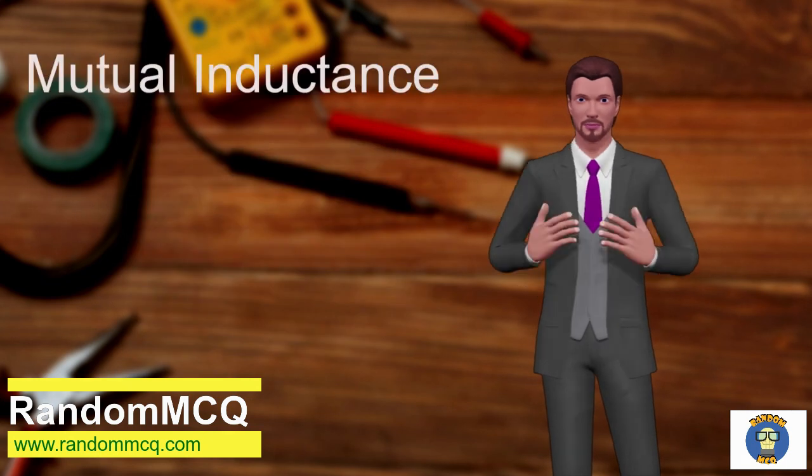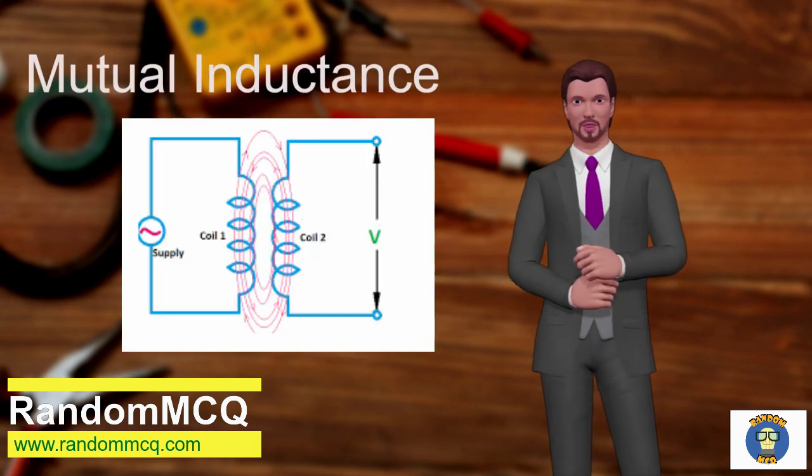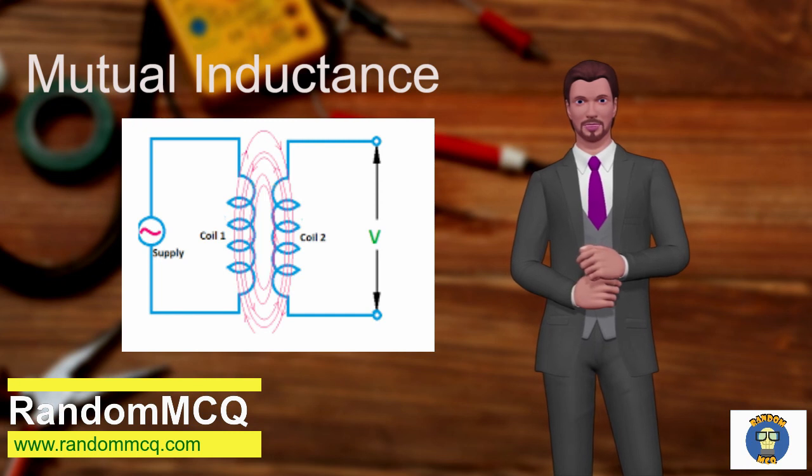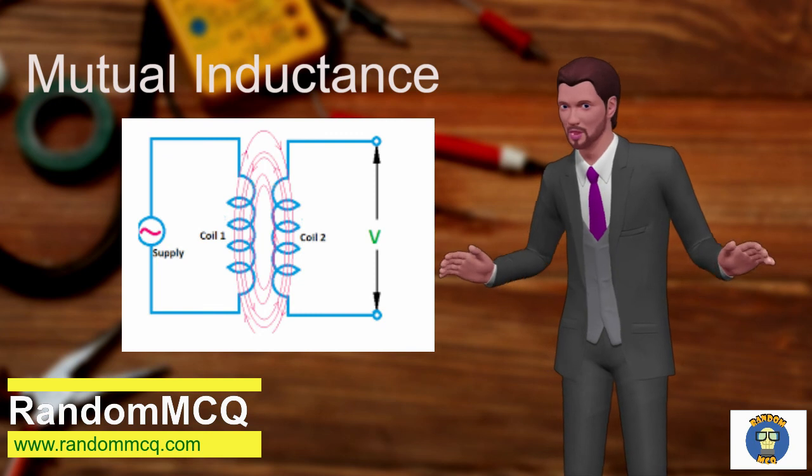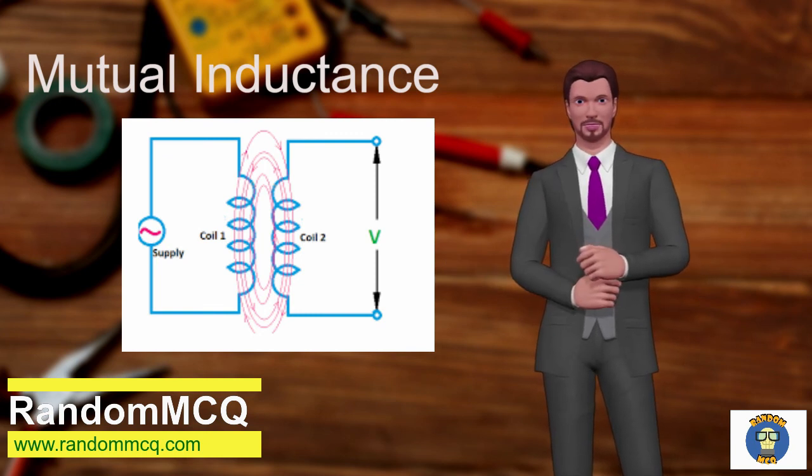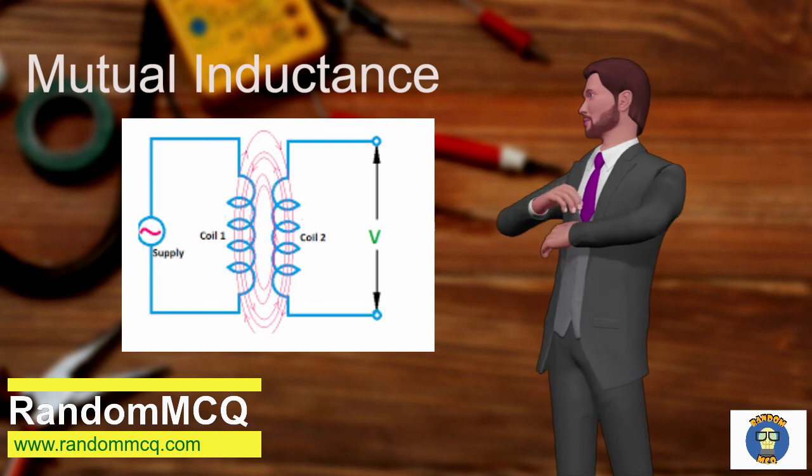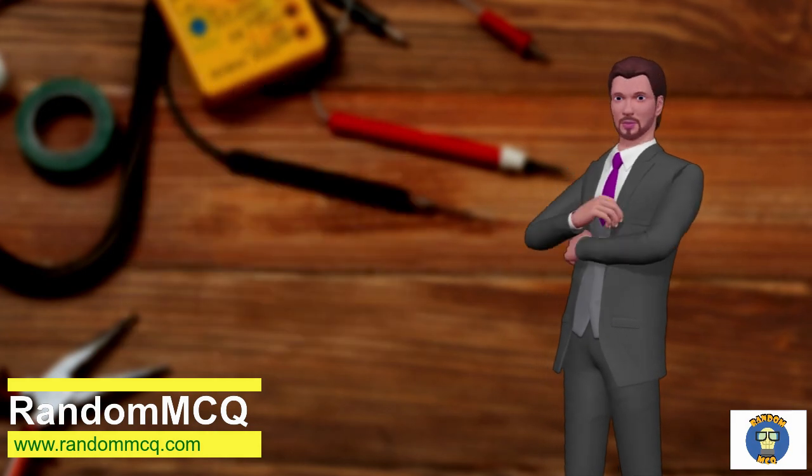Mutual inductance: When time-varying current flows in a coil, it produces time-varying flux, as we have already told. This time-varying flux may link with another nearby coil. Due to this flux linkage there will be an induced emf in the second coil.